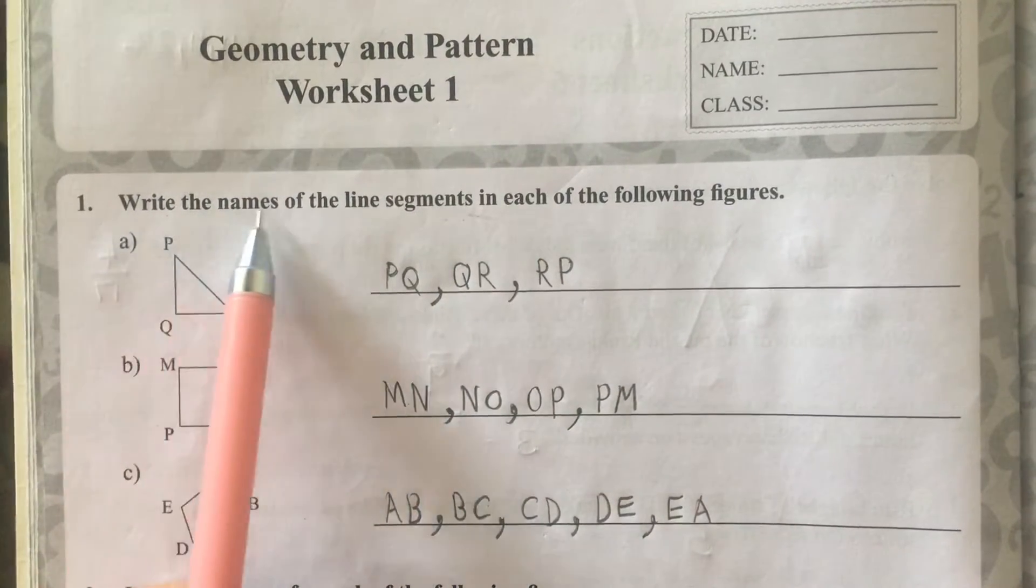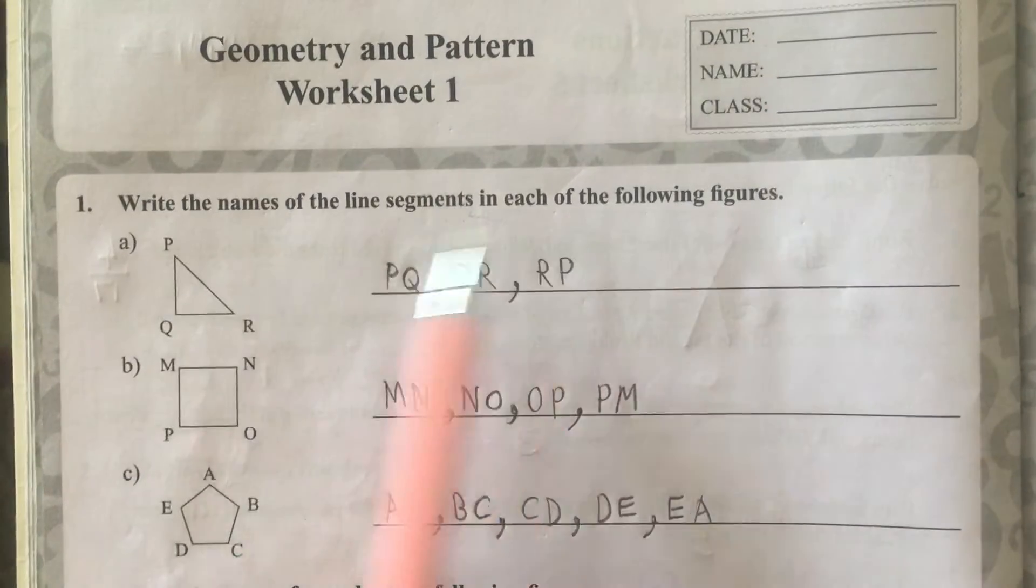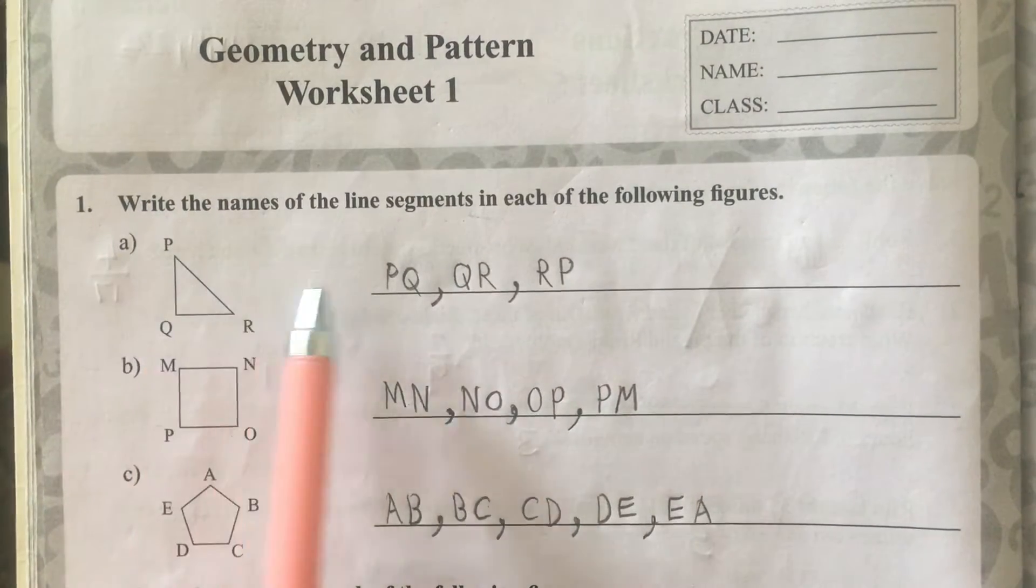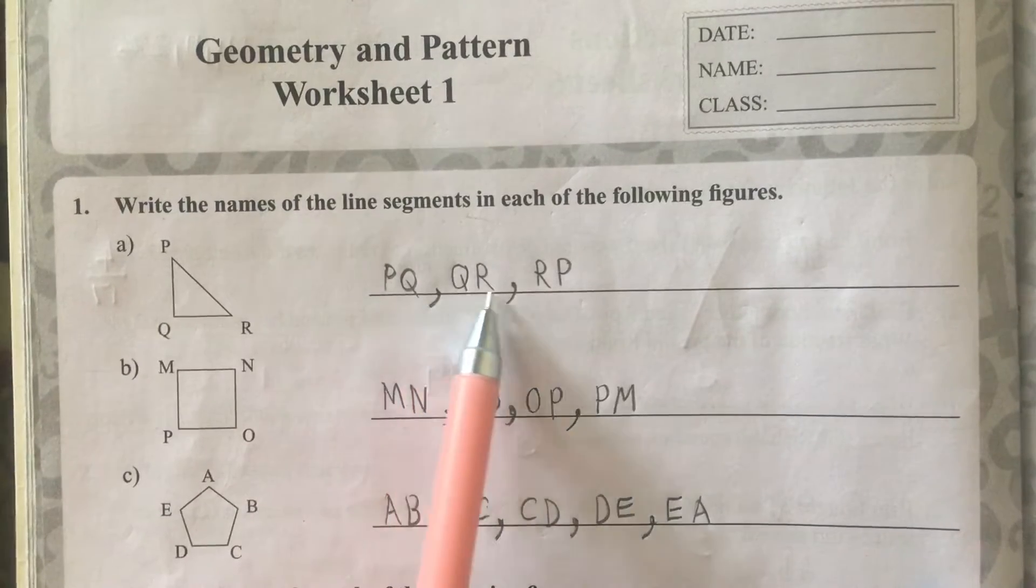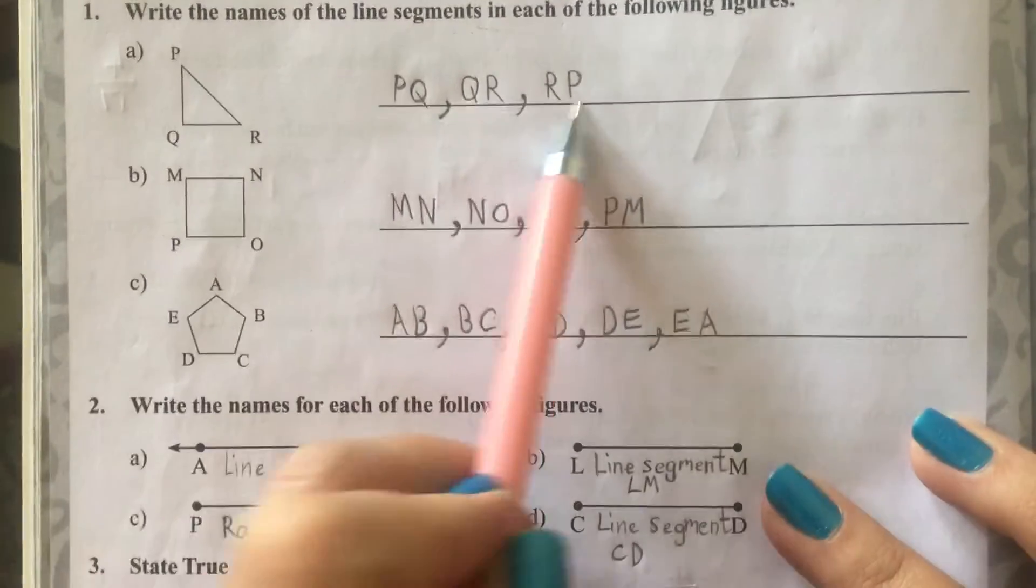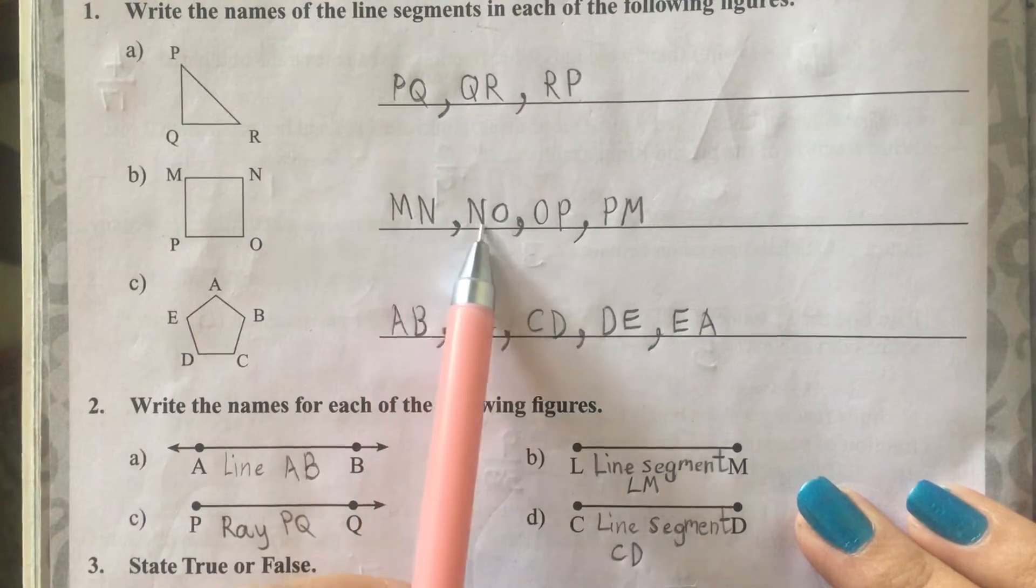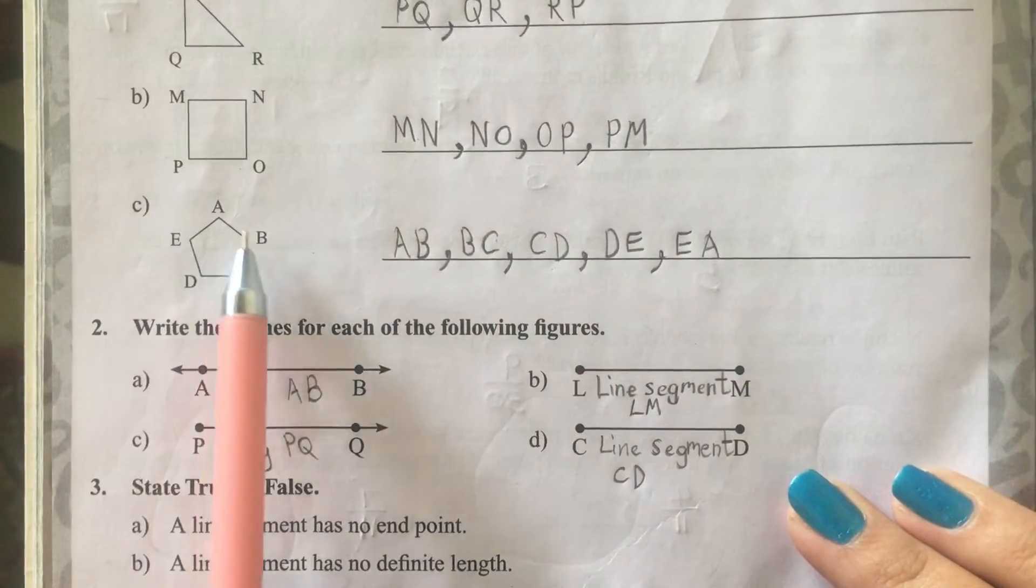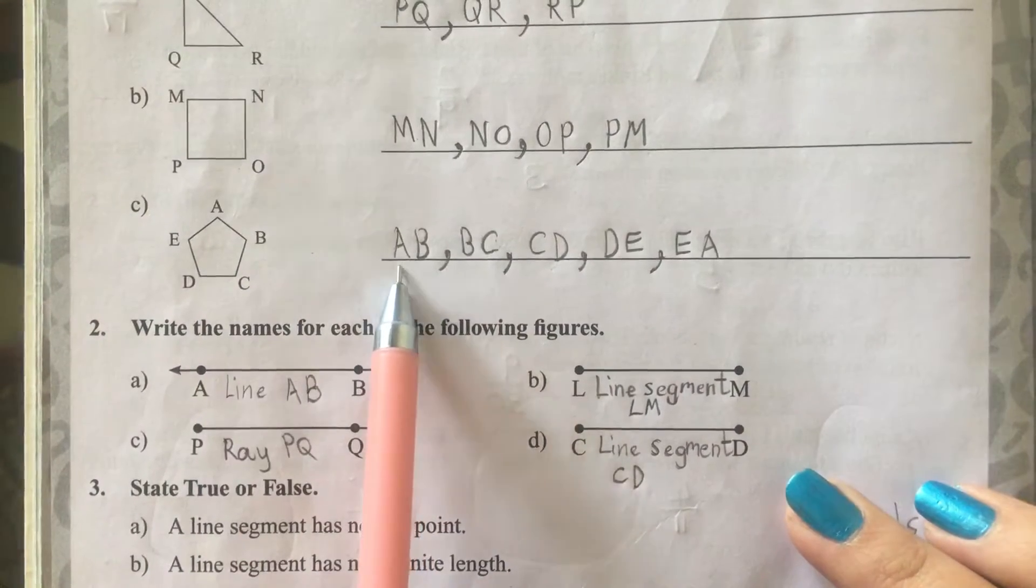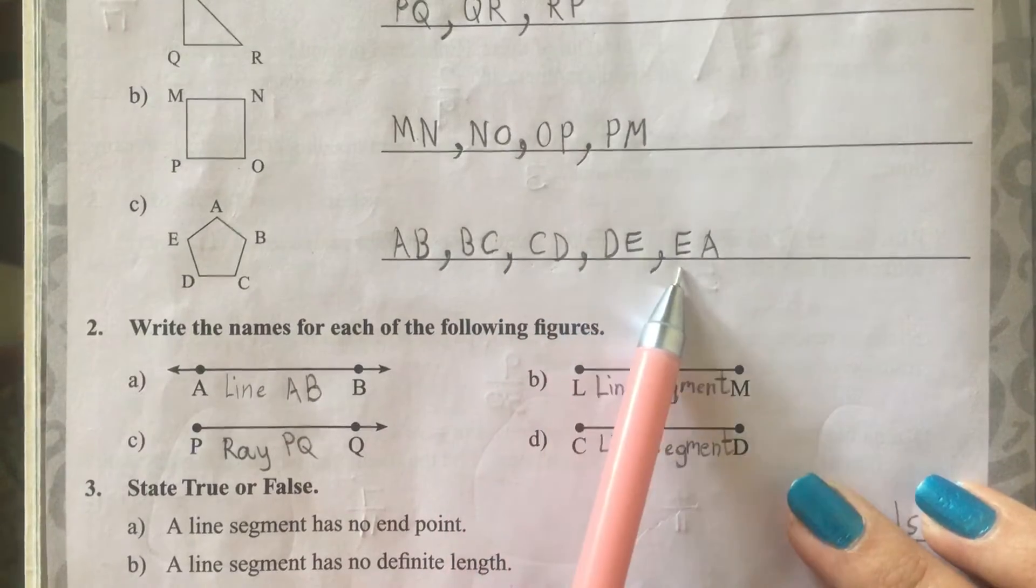1. Write the names of the line segments in each of the following figures. A. There are 3 line segments and they are PQ, QR, RP. B. There are 4 and they are MN, NO, OP, PN. C. There are 5 line segments and they are AB, BC, CD, DE, EA.